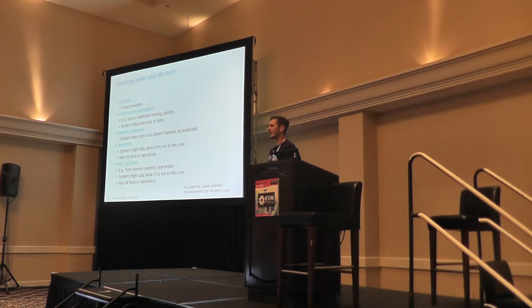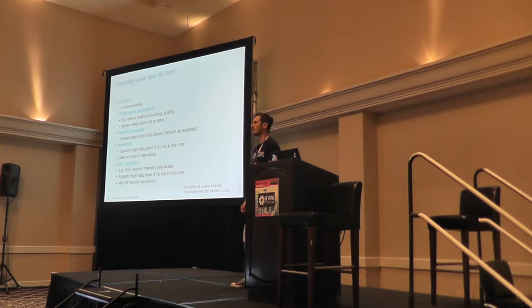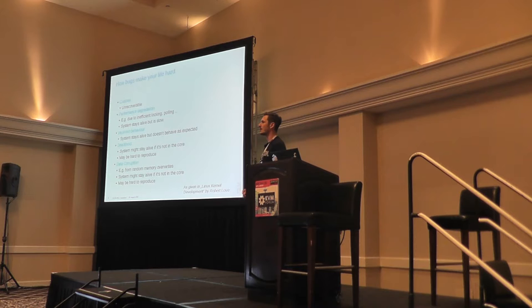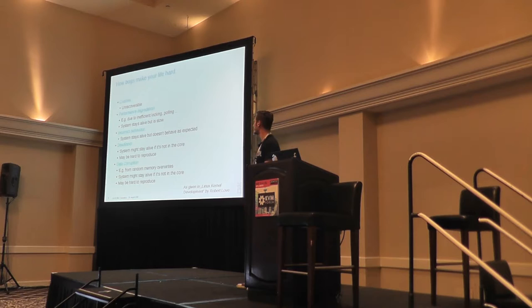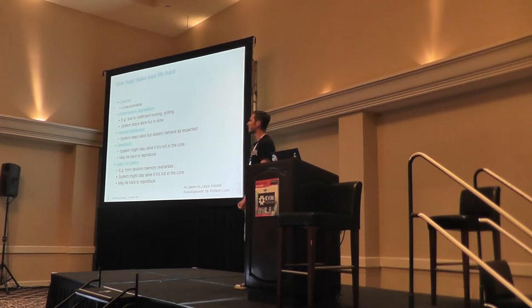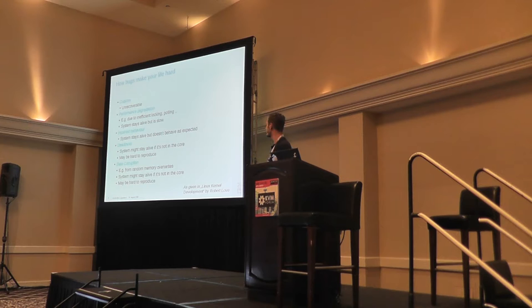Incorrect behavior is from my point of view one of the most common types of bugs — the system still works but doesn't behave as expected, for example due to wrong calculations. Deadlocks can be really hard to debug: they may not be reproducible, and the system might stay alive but suddenly hang. What I think is the worst type of bug is data corruption related to random memory overwrites — your system stays alive for days, then you have a random crash with no way to reproduce it.